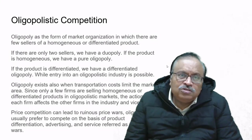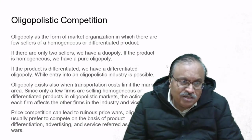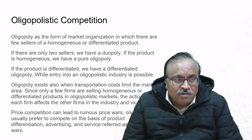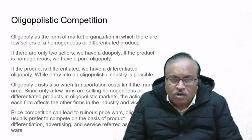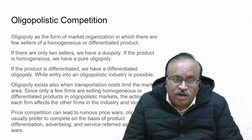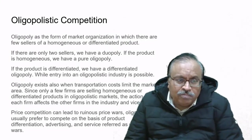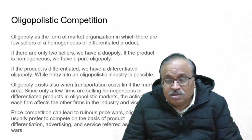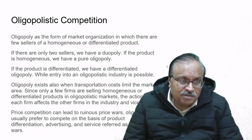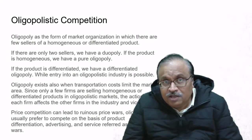Oligopolistic competition: oligopoly is a form of market organization with few sellers of a homogeneous or differentiated product. If there are only two sellers, we have a duopoly. If the product is homogeneous, we have a pure oligopoly; if differentiated, a differentiated oligopoly. Entry into an oligopolistic industry is possible, but oligopoly exists when transportation costs or other factors limit the market area—as in the cement industry, which is confined to specific geographies.